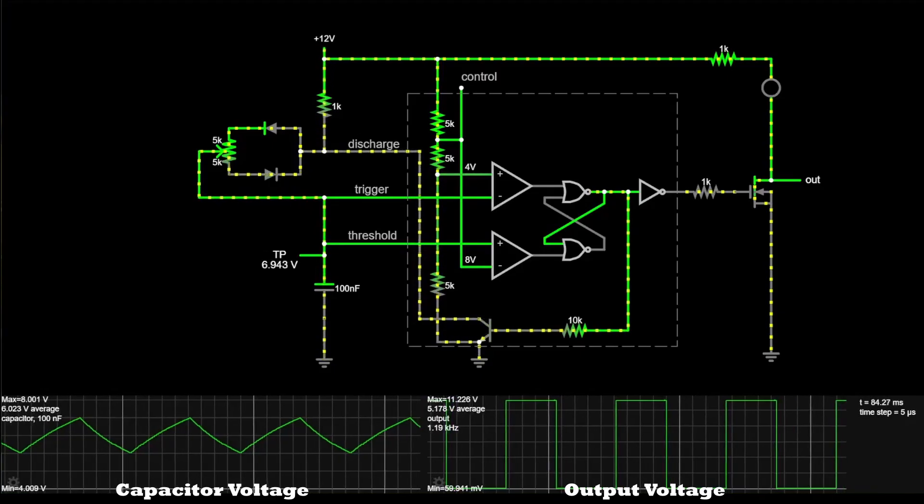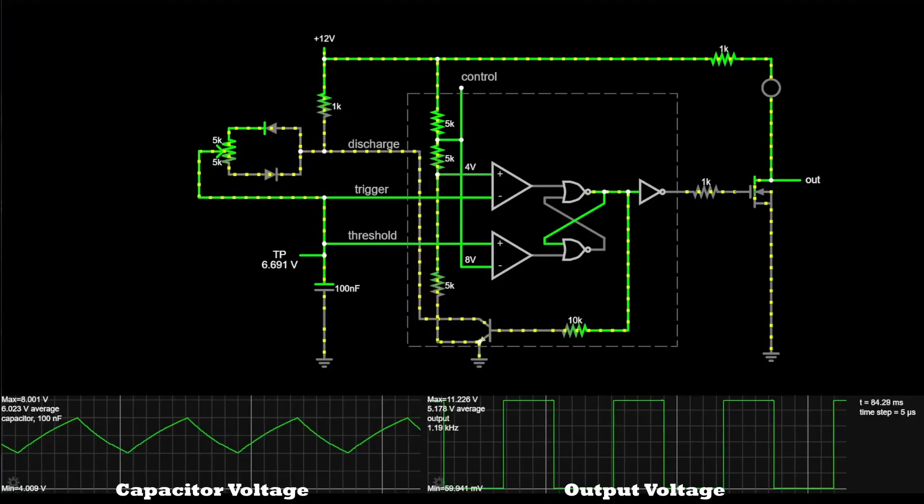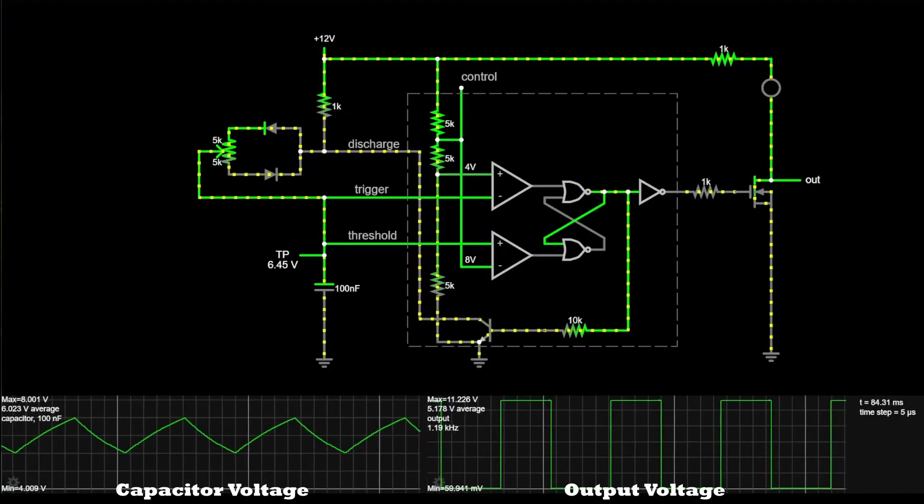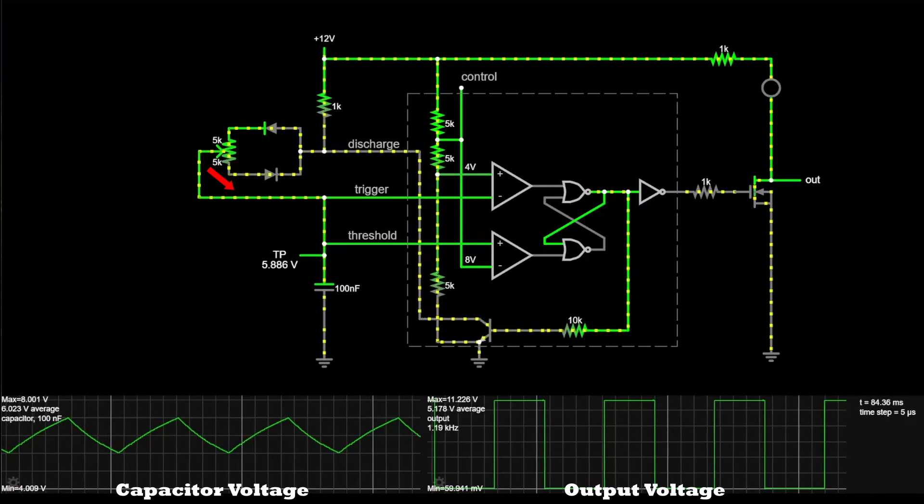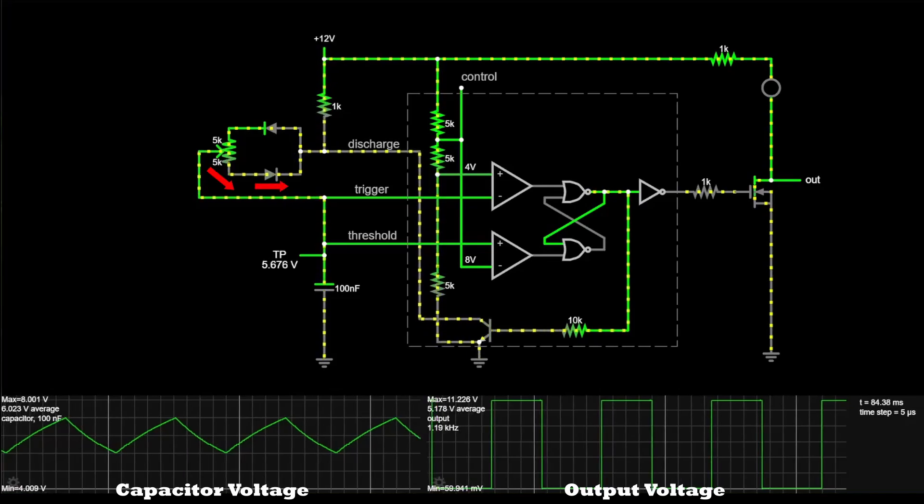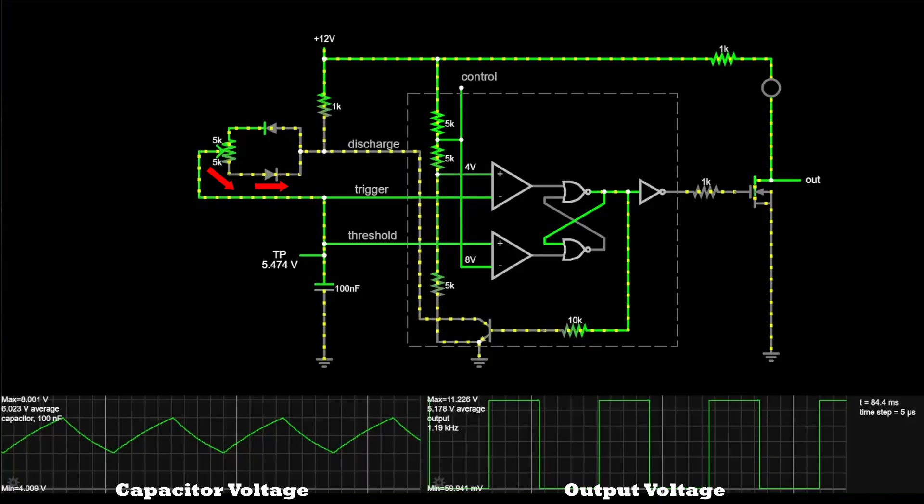At this point, the discharge transistor becomes active, and the capacitor will begin discharging. Current will now pass through the bottom leg of the potentiometer and bottom diode to ground, because the top diode is reverse biased.